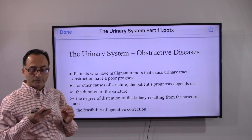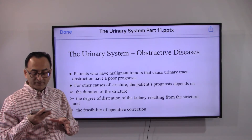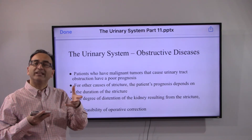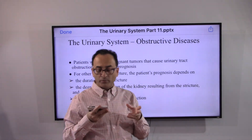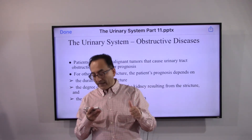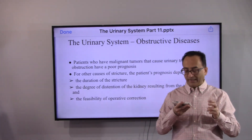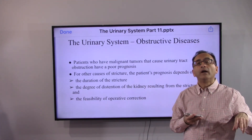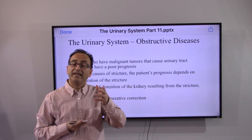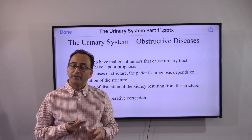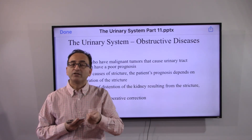Statistically, patients who have malignant tumors causing urinary tract obstruction have a poor prognosis. For other causes of stricture, prognosis depends on the duration of the stricture, the degree of distension of the kidney, and the feasibility of operative correction. Doctors coordinate all these aspects to arrive at the right course of treatment, just as underwriters coordinate all aspects of a customer's profile to make the best possible offer.